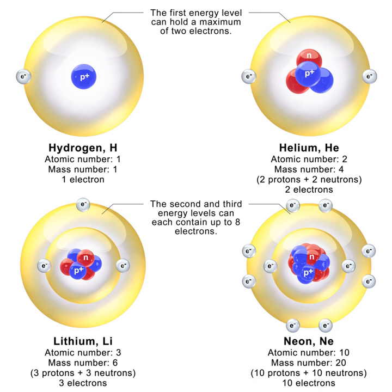Strictly speaking, isotopes are two or more nuclides with the same number of protons; nuclides with the same number of neutrons are called isotones. The atomic mass number, symbol A, equals Z plus N. Nuclides with the same atomic mass number are called isobars. The nucleus of the most common isotope of the hydrogen atom with chemical symbol 1H is a lone proton. The nuclei of the heavy hydrogen isotopes deuterium and tritium contain one proton bound to one and two neutrons, respectively. All other types of atomic nuclei are composed of two or more protons and various numbers of neutrons.